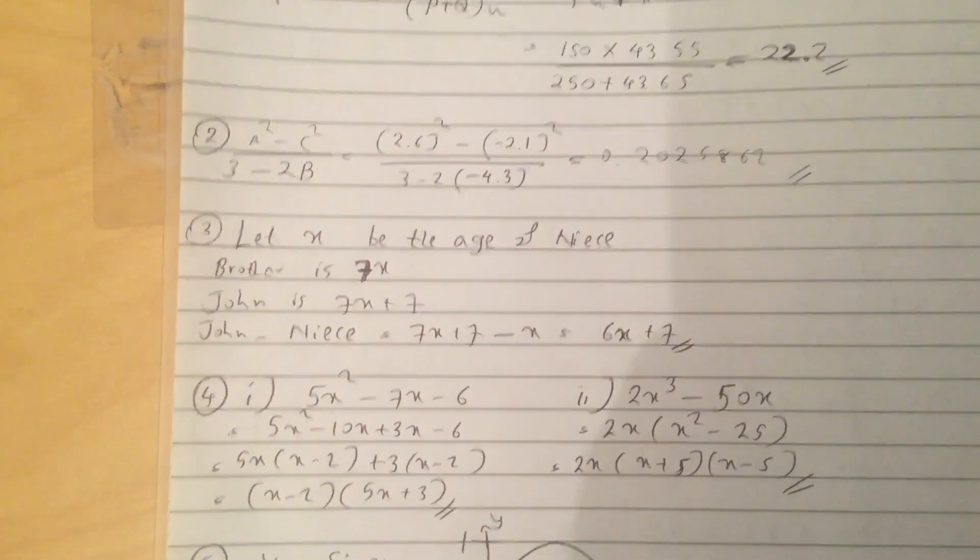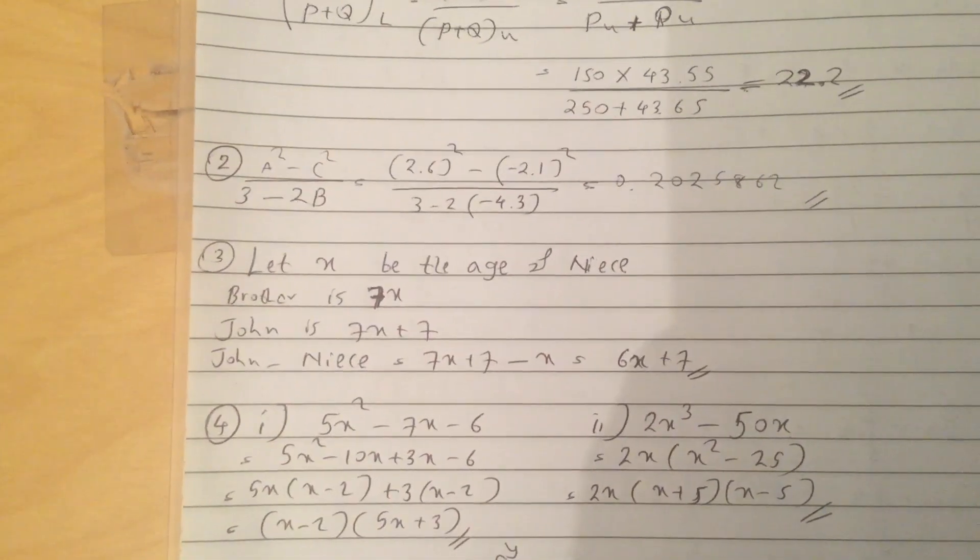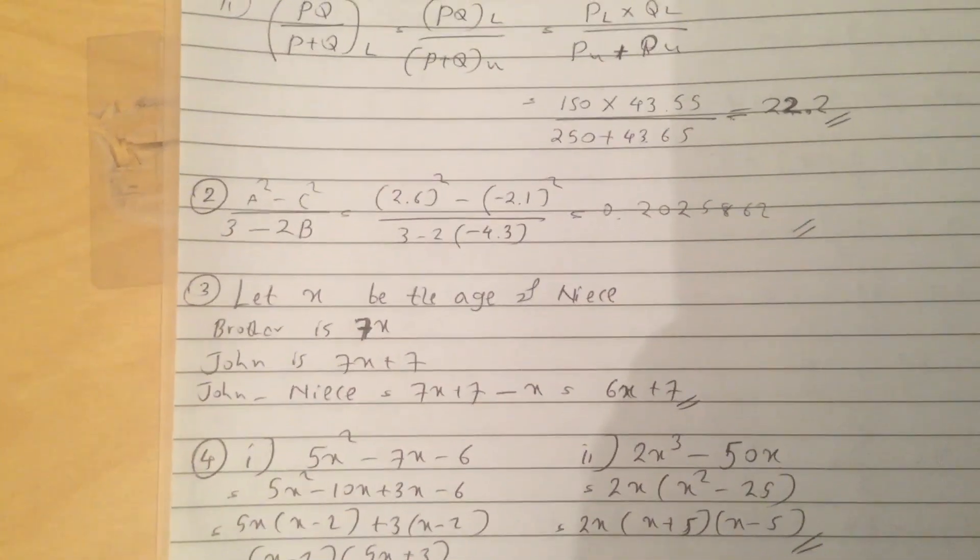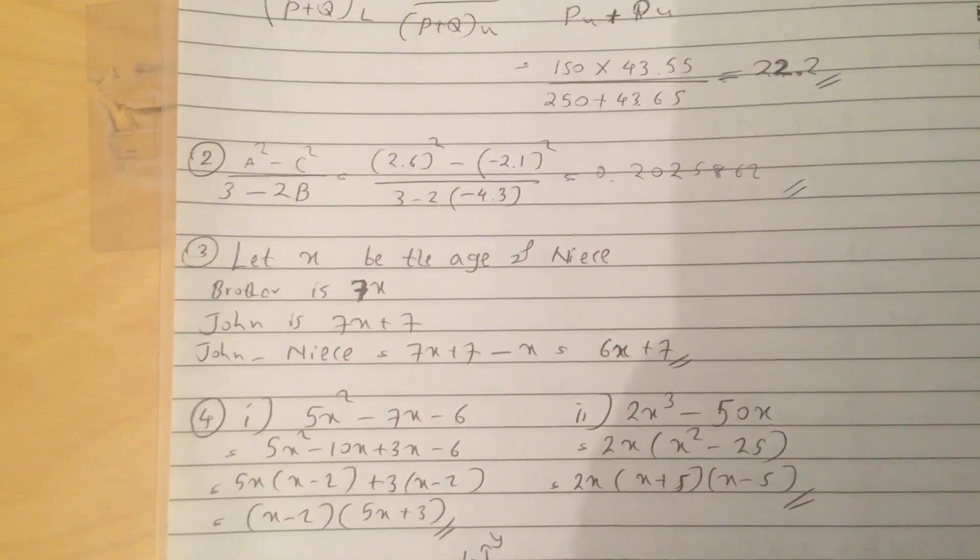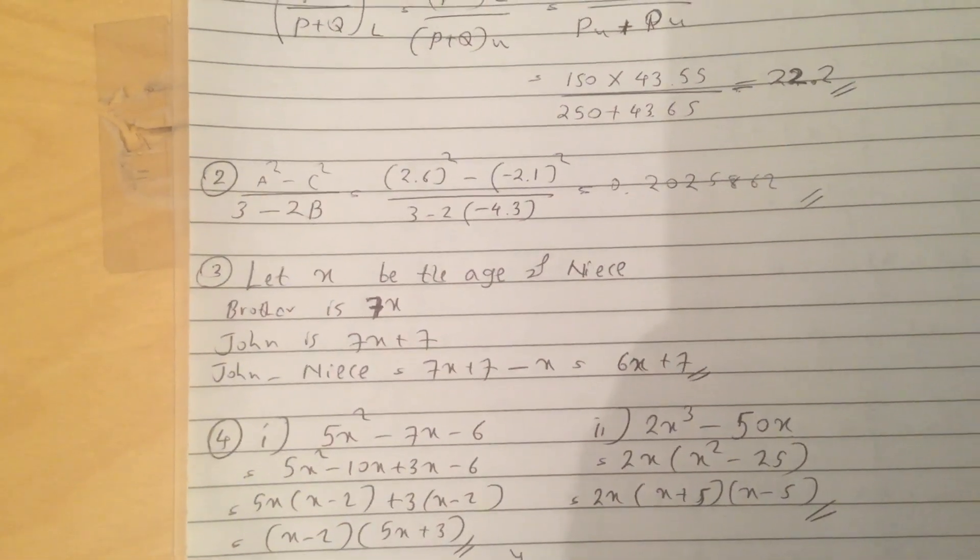Question 3, let X be the age of Niece, so brother is 7X, John would be 7X plus 7. So John minus Niece equals 7X plus 7 minus X, which is 6X plus 7.